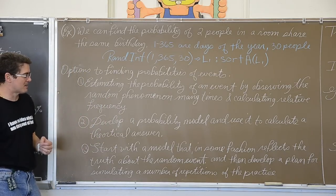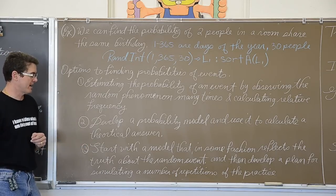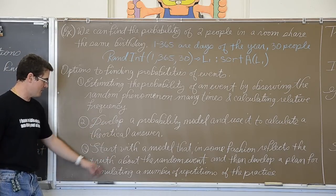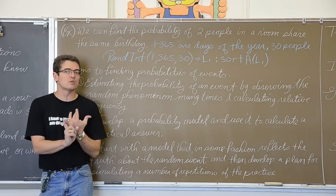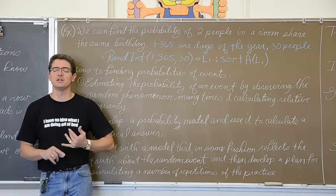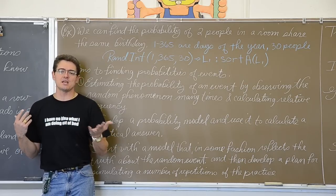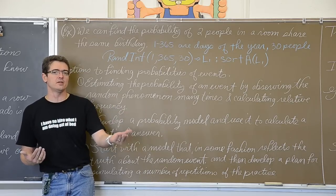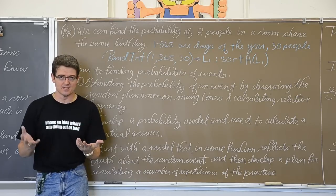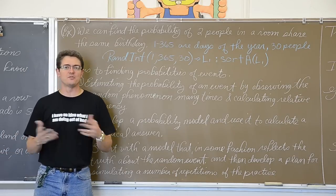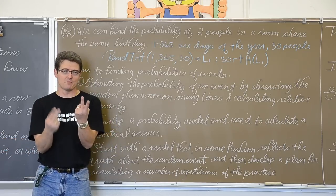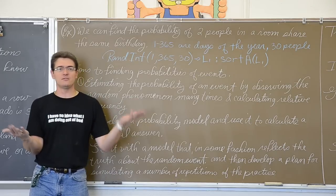And finally, start with a model that in some fashion reflects the truth about the random event, and then develop a plan for simulating the number of repetitions of the practice. And now this is what we are talking about: simulations. Assign numerical values, if that is what you are randomly generating, to real life events. And make sure that those number assignments match the probability of that event occurring. If something has a 67% probability, I am going to say values 1 to 67 is a success and 68 to 100 is not a success. If I am just flipping a coin however, like the previous example, that is 50-50. So I can just say zero is heads and one is tails. Because that is a 50-50 outcome.